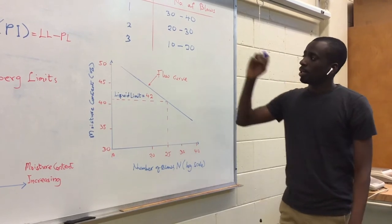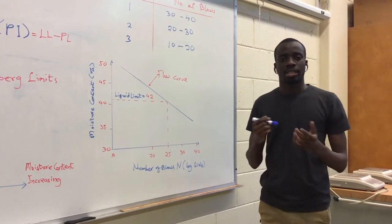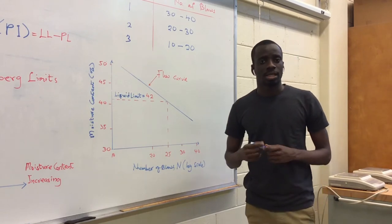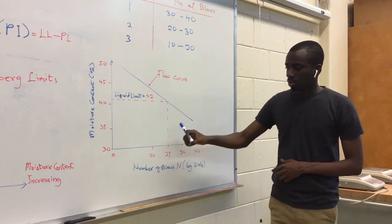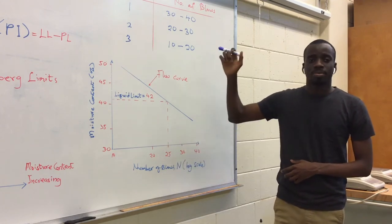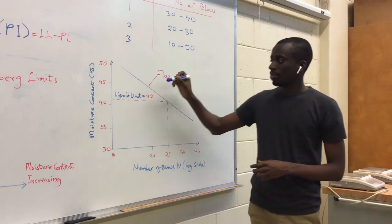For all the tests, we are going to take samples and put them in the oven and determine the various moisture content that the closure happened. Then we are going to plot the number of blows required to close the groove against their respective moisture content. After plotting this graph, this becomes our flow curve.